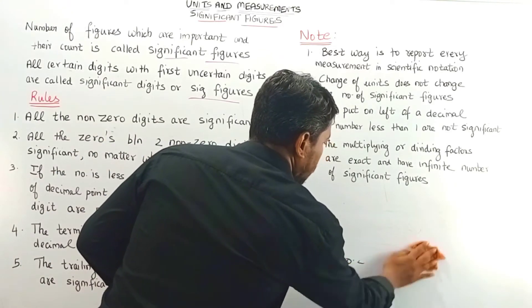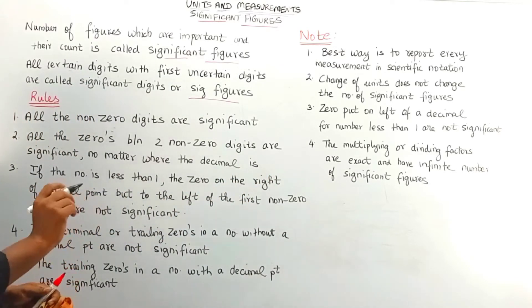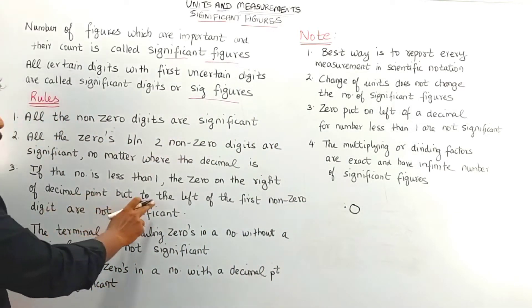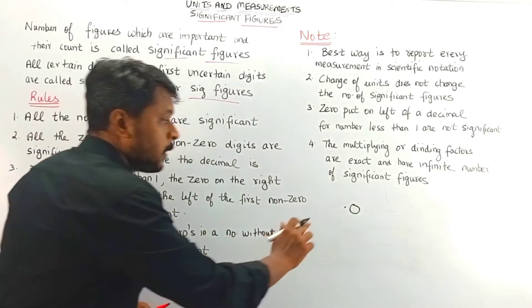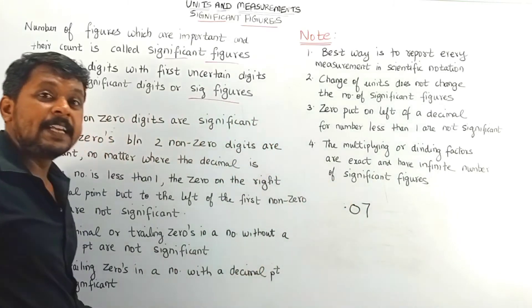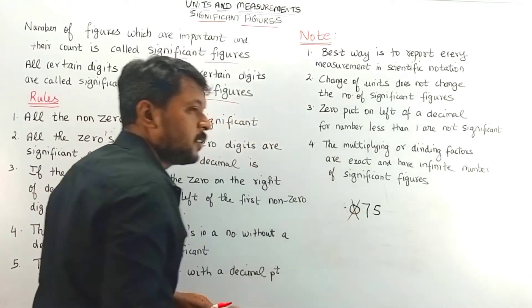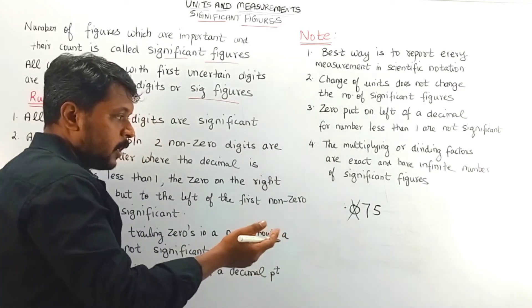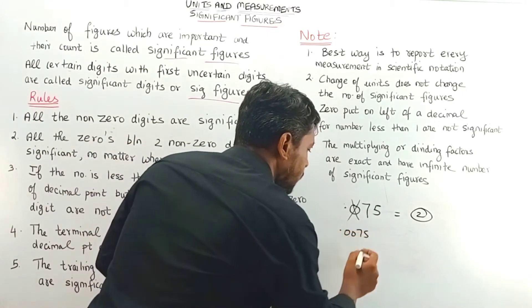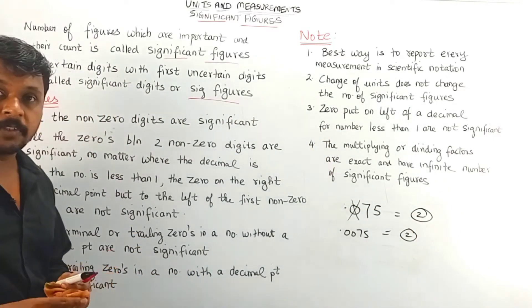The third rule: if the number is less than 1, zeros on the right of the decimal point and to the left of the first non-zero digit are not significant. For example, 0.075 — this zero is not significant, so the total count of significant figures is 2. Similarly, 0.0075 also has only 2 significant figures.